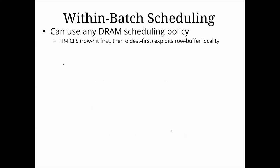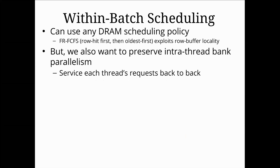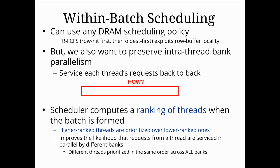Within our batch, we can use any of the DRAM scheduling policies we've seen. We can use row hit first and oldest first to exploit row buffer locality. But the entire point of batching was to preserve bank level parallelism between threads, so we're also going to want to service thread requests back to back. The way we do this is by computing a ranking of threads and sorting our requests according to that ranking — higher ranked threads are prioritized over lower ranked ones.